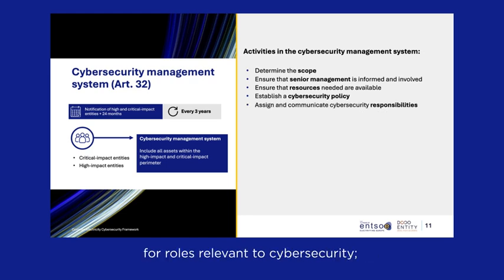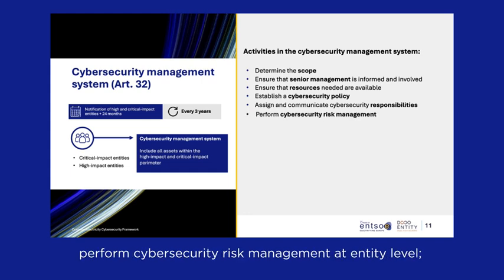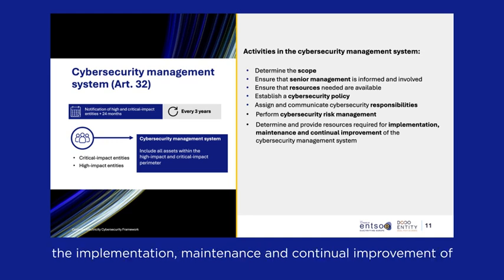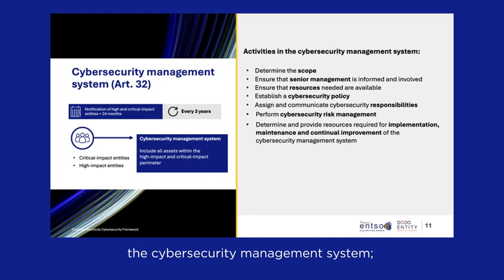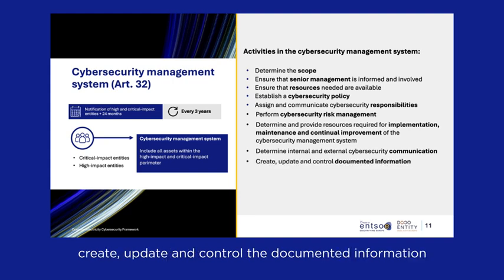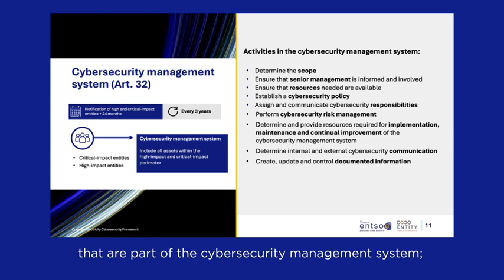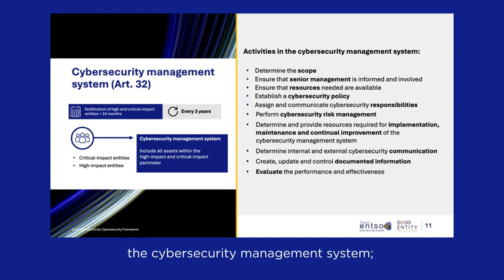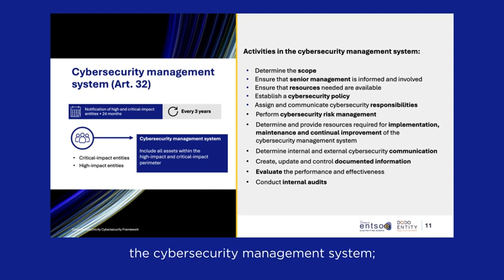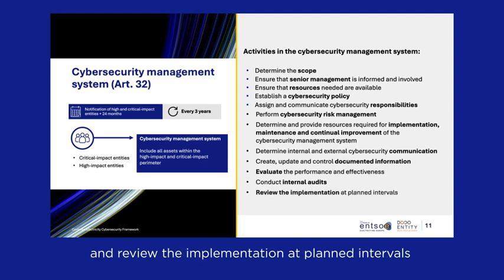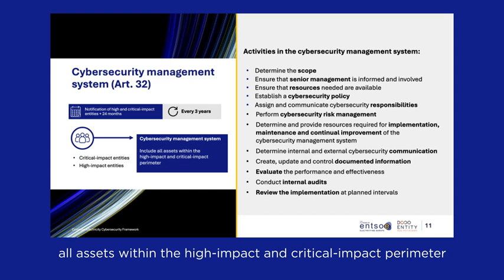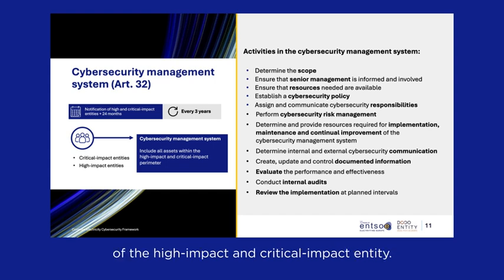Further objectives include: assign and communicate responsibilities for roles relevant to cybersecurity; perform cybersecurity risk management at entity level; determine and provide the resources required for the implementation, maintenance and continual improvement of the cybersecurity management system; determine the required internal and external communication on cybersecurity; create, update, and control the documented information that are part of the cybersecurity management system; evaluate the performance and effectiveness of the system; conduct internal cybersecurity audits to ensure compliance; and review the implementation at planned intervals to identify possible improvements. The scope of the cybersecurity management system should include all assets within the high-impact and critical-impact perimeter.